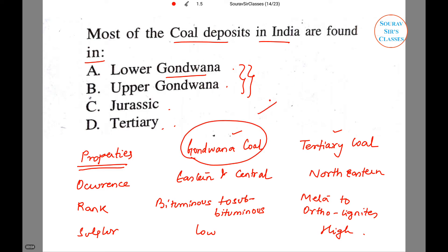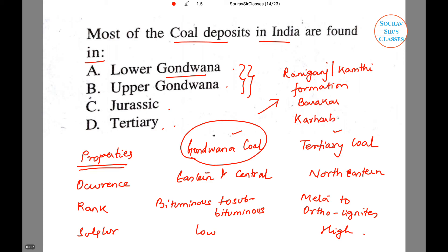Gondwana coal has different kinds of formations. These include the Raniganj or Kamthi formation, the Barakar formation, and the Karharbari formation, among others.